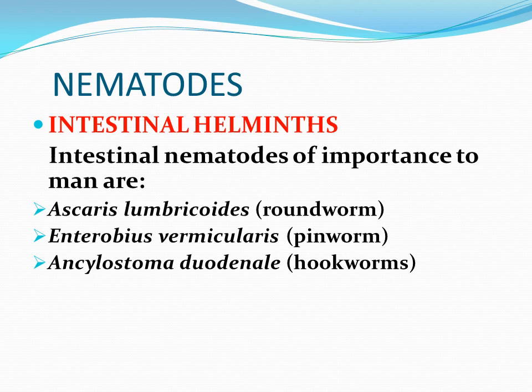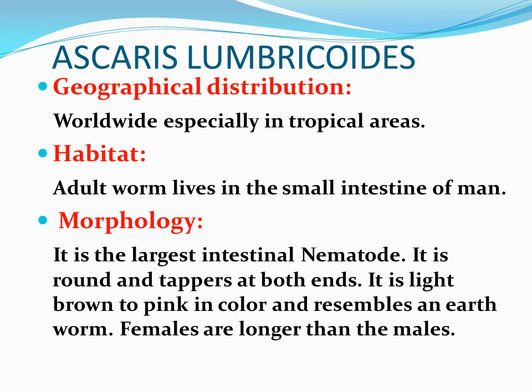Firstly, we will be discussing Ascaris lumbricoides. The geographical distribution of Ascaris lumbricoides is worldwide, especially in the tropical areas. The habitat is that the adult worm lives in the small intestine of man. Coming to the morphology, it is the largest intestinal nematode, known as the giant roundworm. It is round, tapers at both ends, is light brown to pink in color, and resembles an earthworm.